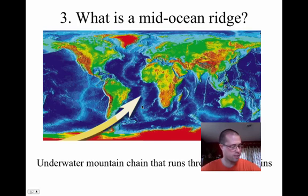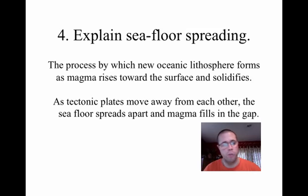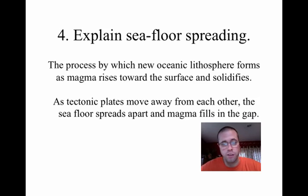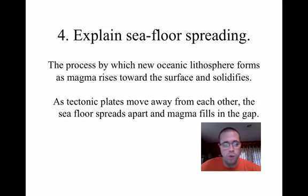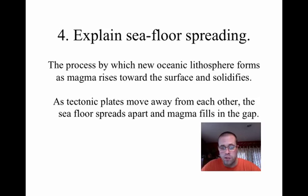Number four, at the bottom of the front page: explain seafloor spreading. This is the process by which new oceanic lithosphere — not just crust, but lithosphere, which is the crust and part of the upper mantle — forms as magma rises toward the surface and then solidifies. As tectonic plates move away from each other, the seafloor spreads apart, magma comes up from this divergent boundary, fills the gap, hardens, and then the whole process happens again.